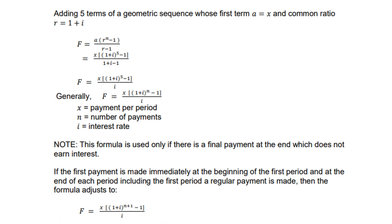Adding 5 terms of a geometric sequence, where first term a is x and the common ratio r equals 1 + i, then the future value formula will be a(r^n - 1)/(r - 1). Remember, this comes from our geometric sequence. Then a is x, r is 1 + i.